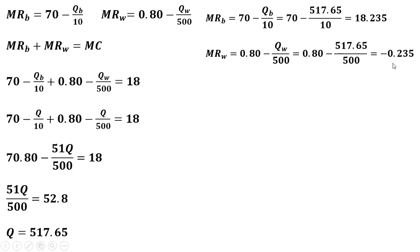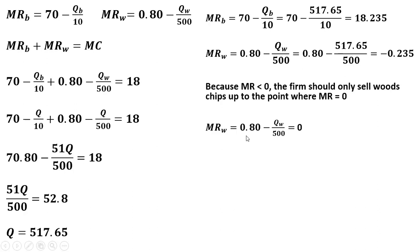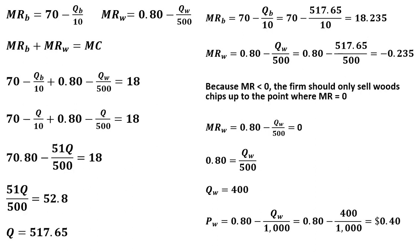The marginal revenue for wood chips comes out negative — this is a problem. When one of the marginal revenues is negative at this output level, we should sell wood chips only up to the point where marginal revenue equals zero. Setting the wood chip marginal revenue equation equal to zero and solving for Q_W, the firm should only sell 400 wood chips. They may produce more, but only want to sell 400. Plugging 400 back into the inverse demand for wood chips, we sell a unit of wood chips at 40 cents each.